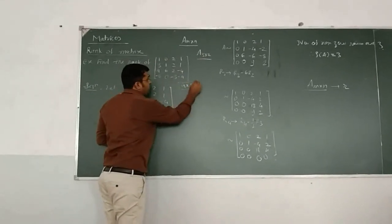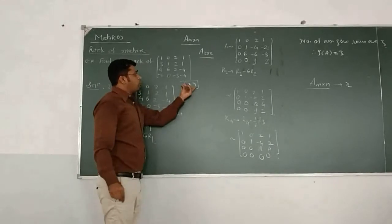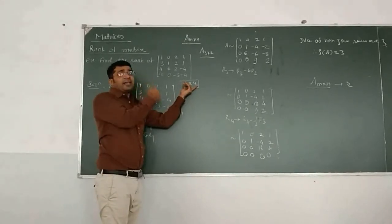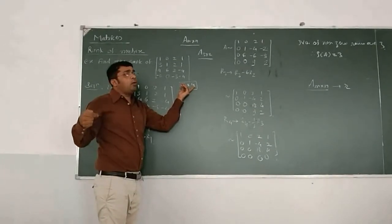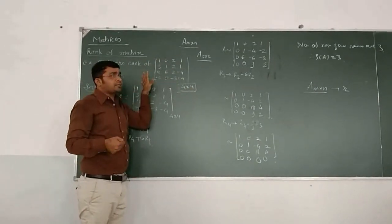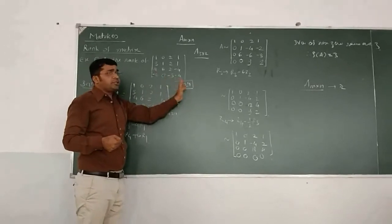Here we are having a matrix of the order 4 by 4. So the lowest number is 4. So the matrix rank is 4, 3, 2, or 1. 0 is not because it is not a null matrix. So there are 4 possibilities: 4, 3, 2, 1.